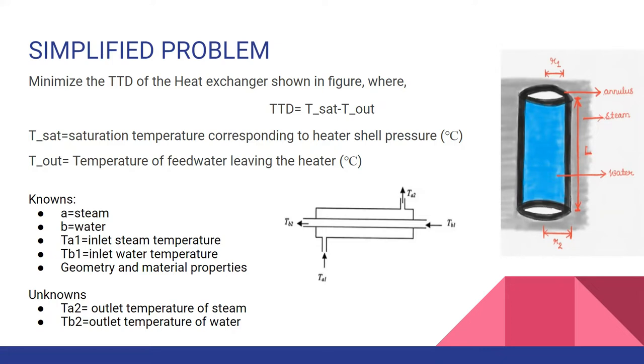Unknowns that are here are TA2 outlet temperature of steam and TB2 outlet temperature of water. The main problem, how we will be dealing with, is to minimize the TTD of the heat exchanger. Where TTD here is T_sat minus T_out. T_sat is saturation temperature corresponding to heater shell pressure. And T_out is the temperature of feed water that is leaving the heater. This was a simplified problem that we worked upon.